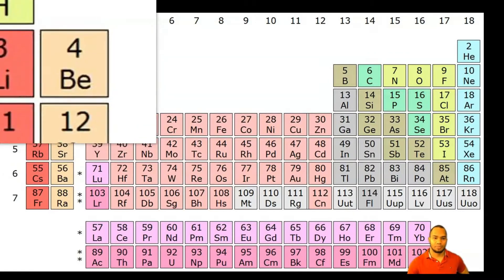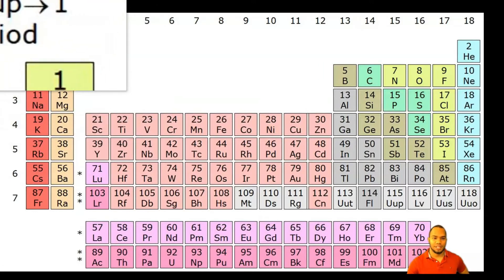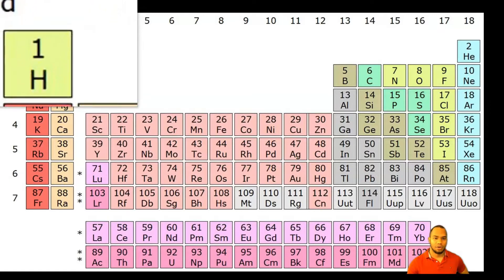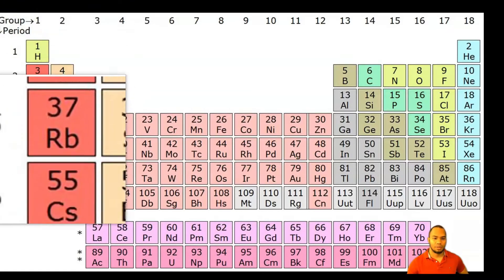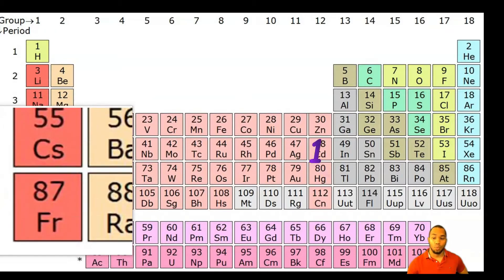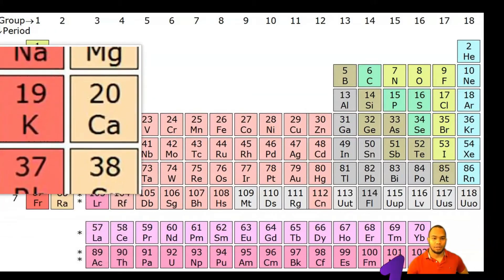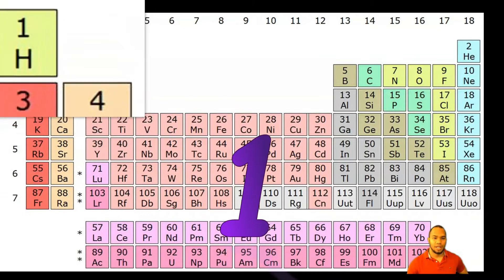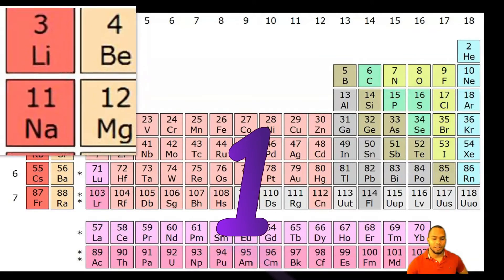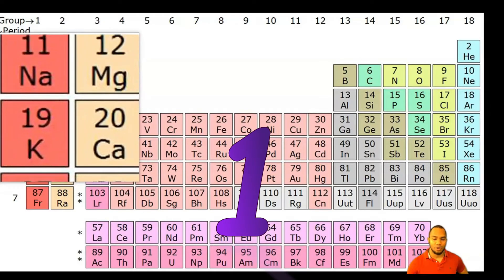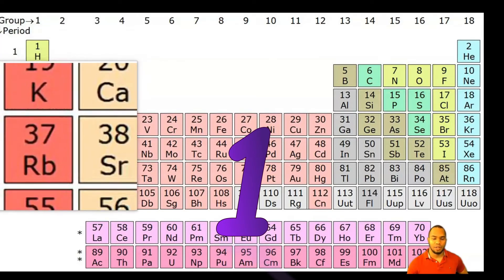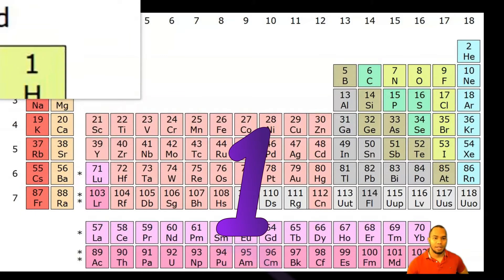When you look at the periodic table, we first must identify the group number. All the elements in column one have one valence electron. All the elements - hydrogen, lithium, sodium, potassium - all these elements in group one have one valence electron.